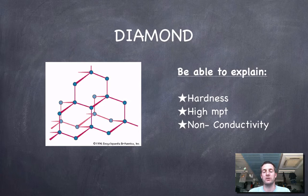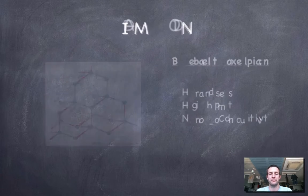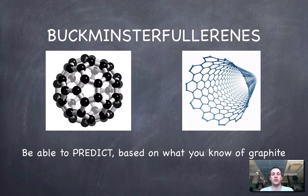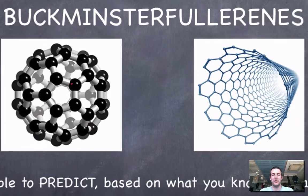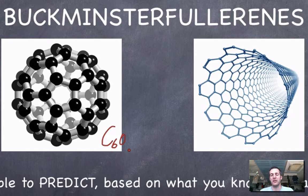We're going to finish off with buckminsterfullerenes. There's lots and lots of these and you certainly don't need to know the structure of all of them or any of them. Here is a bucky ball on the left - this is a C60 molecule, so it's not really a covalent network in that sense because it exists as discrete molecules.